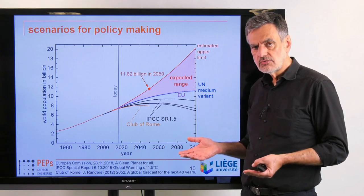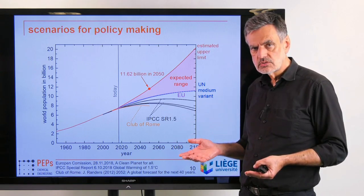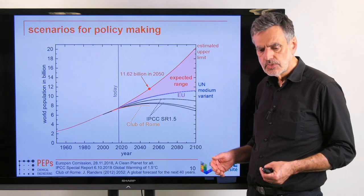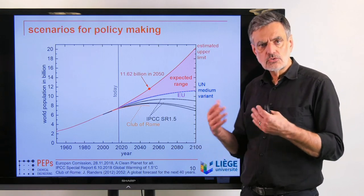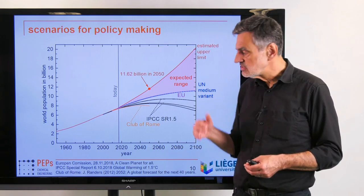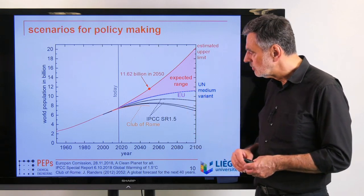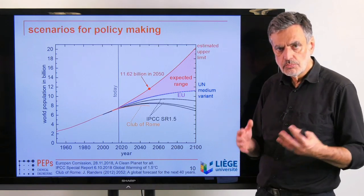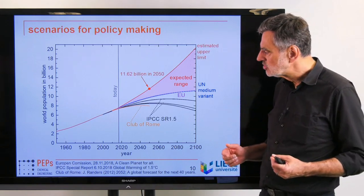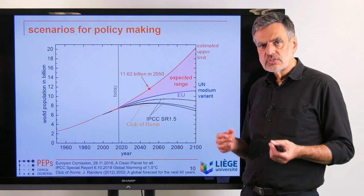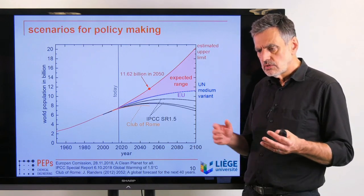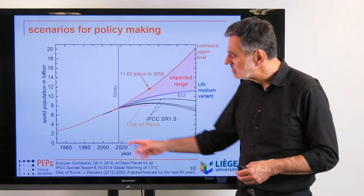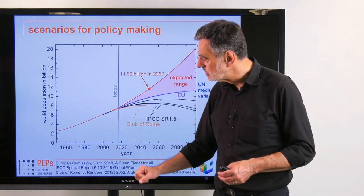The Intergovernmental Panel on Climate Change, which condenses the best studies into best knowledge, has a much lower population growth accounted for, and the Club of Rome is even below that.